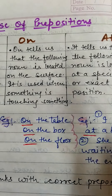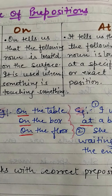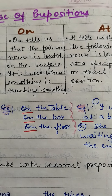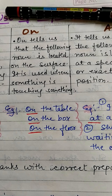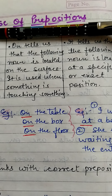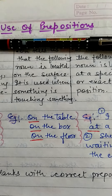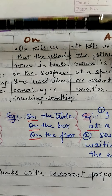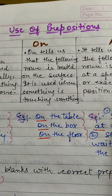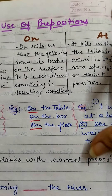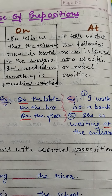Next is the preposition 'on.' The preposition 'on' tells us that the following noun is located on a surface. When something is touching something else, we use 'on' to show it is on the surface. For example, 'My pen is on the notebook.' I have used 'on' because the pen is touching the surface of the notebook. Similarly, this notebook is touching the surface of the table, so we use 'on' to denote surface contact.